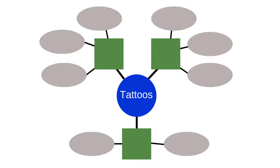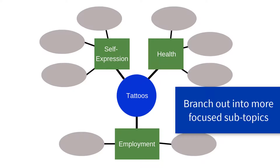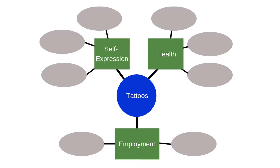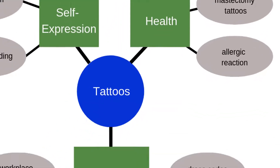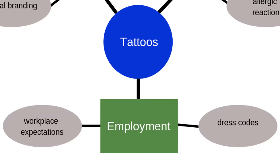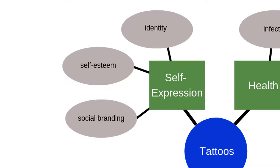In our example, tattoos is our broad initial topic. Subtopics related to tattoos might include health, employment, and self-expression. Going further, subtopics related to health might include personal health, mastectomy tattoos, allergic reactions, and infection. Subtopics related to employment might include professionalism, dress codes, workplace expectations, and employment rates. Finally, self-expression subtopics might include identity, self-esteem, and social branding.